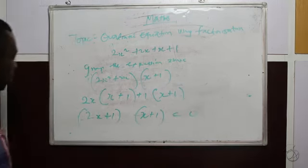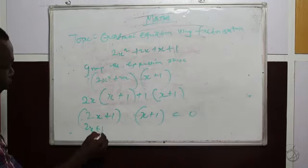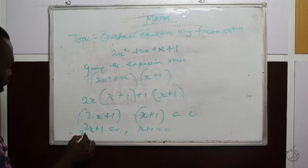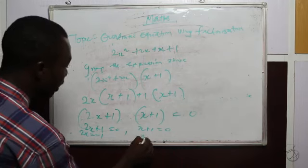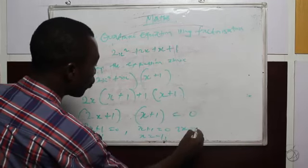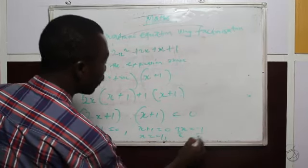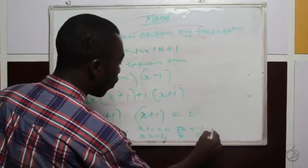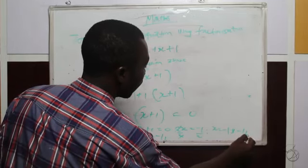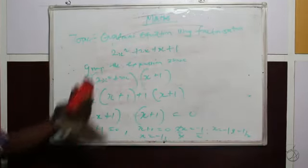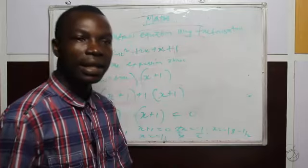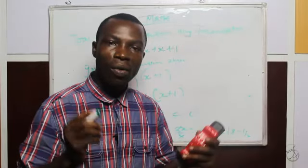We can now continue by equating each factor to zero: 2x + 1 = 0 and x + 1 = 0. From x + 1 = 0, x = −1. From 2x + 1 = 0, 2x = −1. Dividing both sides by 2 gives x = −½. Therefore, x = −1 and x = −½ are the solutions of this quadratic equation using the factorization method.